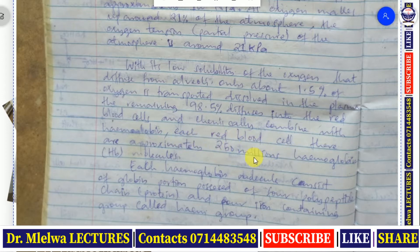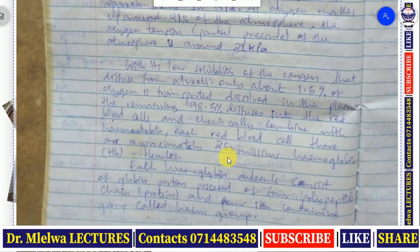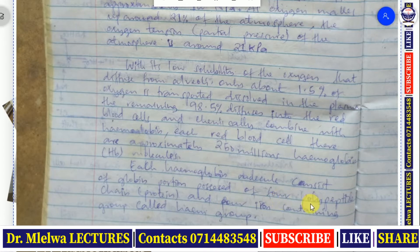Each red blood cell contains approximately 250 million hemoglobin molecules. About 1.5% of oxygen is transported in solution, but 98.5% diffuses into the red blood cell and is carried by hemoglobin. This is because the solubility of oxygen in water or plasma is very small, so without hemoglobin it would be impossible to carry sufficient oxygen. Each hemoglobin molecule consists of a protein portion with four polypeptide chains and four iron-containing heme groups.